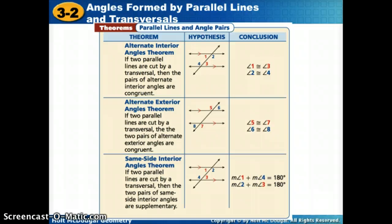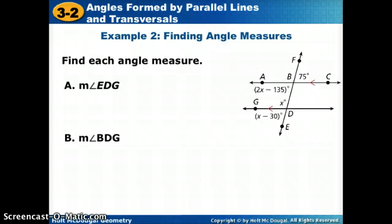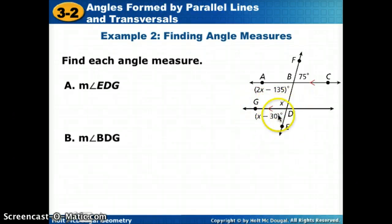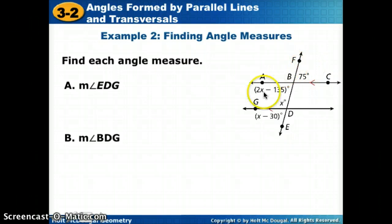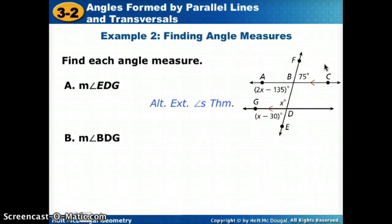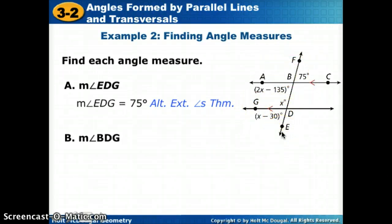Our first question says find the measure of angle EDG. I could set it equal to a corresponding angle, but it's easier to look for the angle that actually has a measure. Angle FBC up here is 75 degrees. The relationship between 75 degrees and this angle is alternate exterior, and alternate exterior angles have equal measures. So I don't even need the expression X minus 30 — this angle is also 75 degrees.